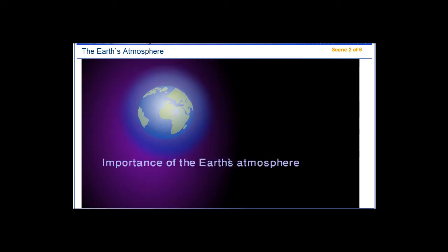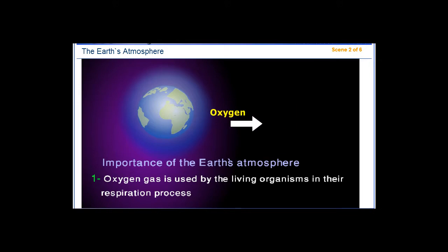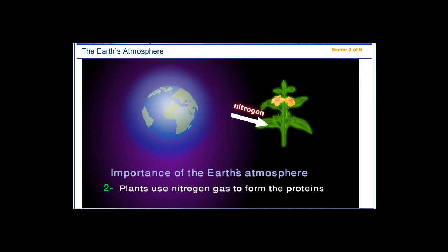Importance of the Earth's Atmosphere. 1. Oxygen gas is used by living organisms in their respiration process. 2. Plants use nitrogen gas to form proteins.